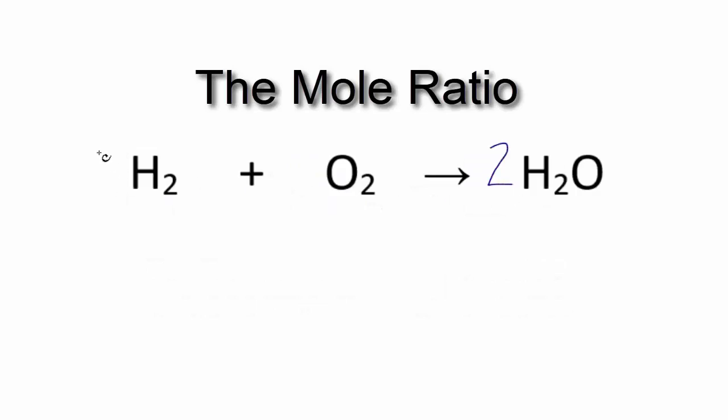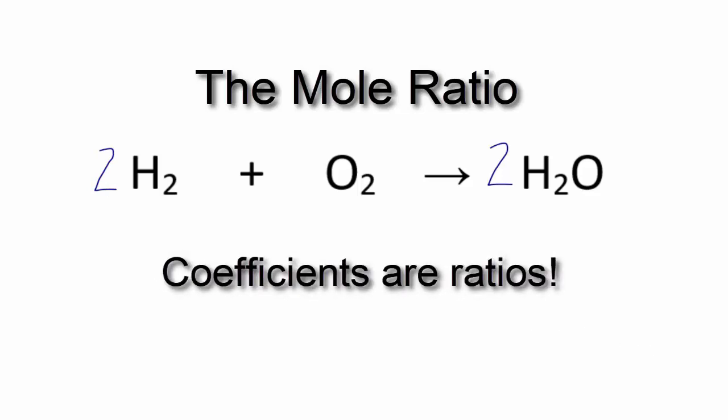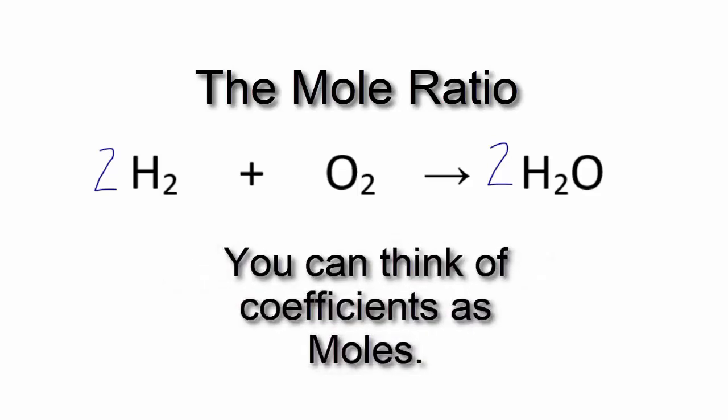First, you balance the chemical equation. That gives you the coefficients. These are ratios between the substances in the reactions, and we often think of the coefficients as ratios of moles, the mole ratio.